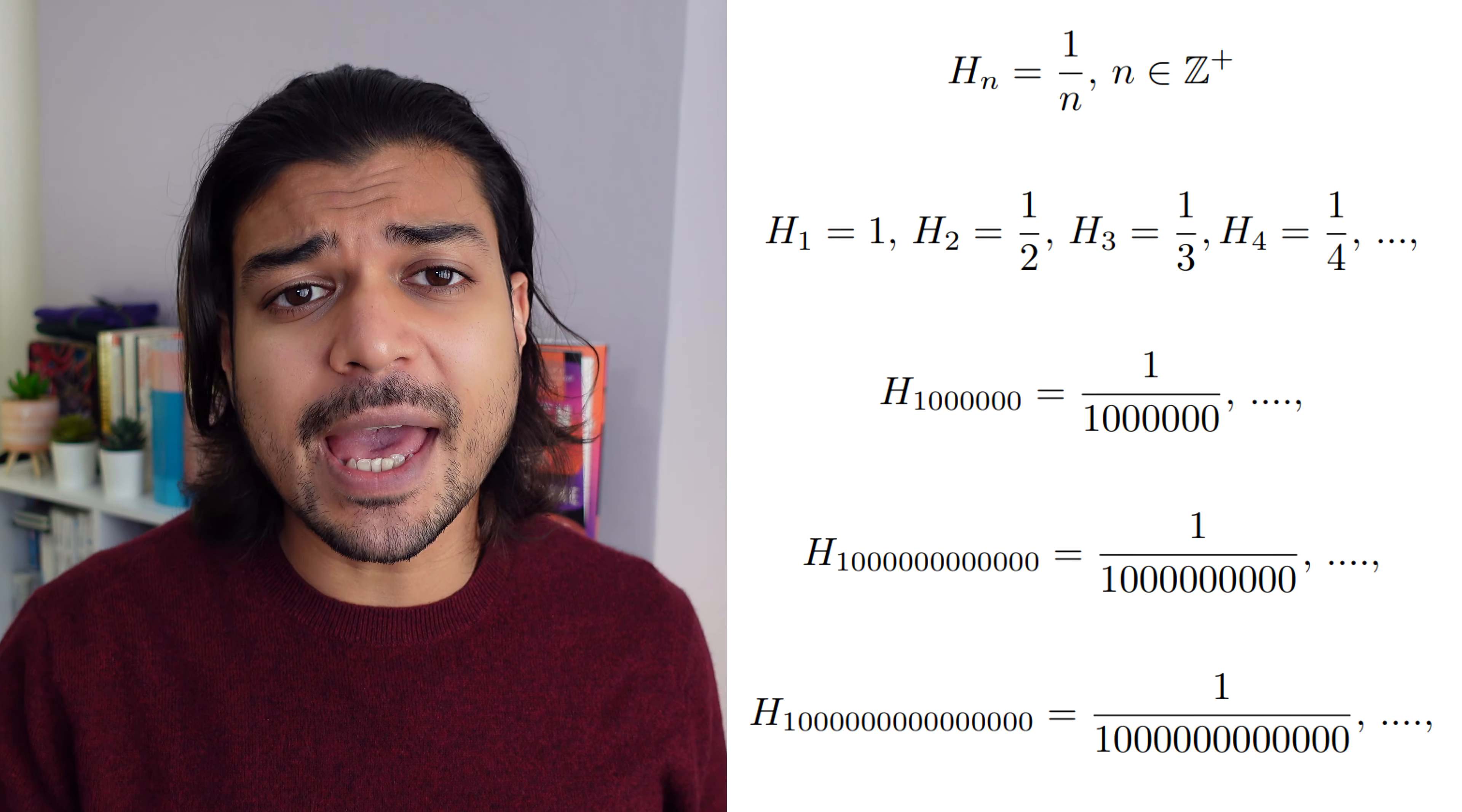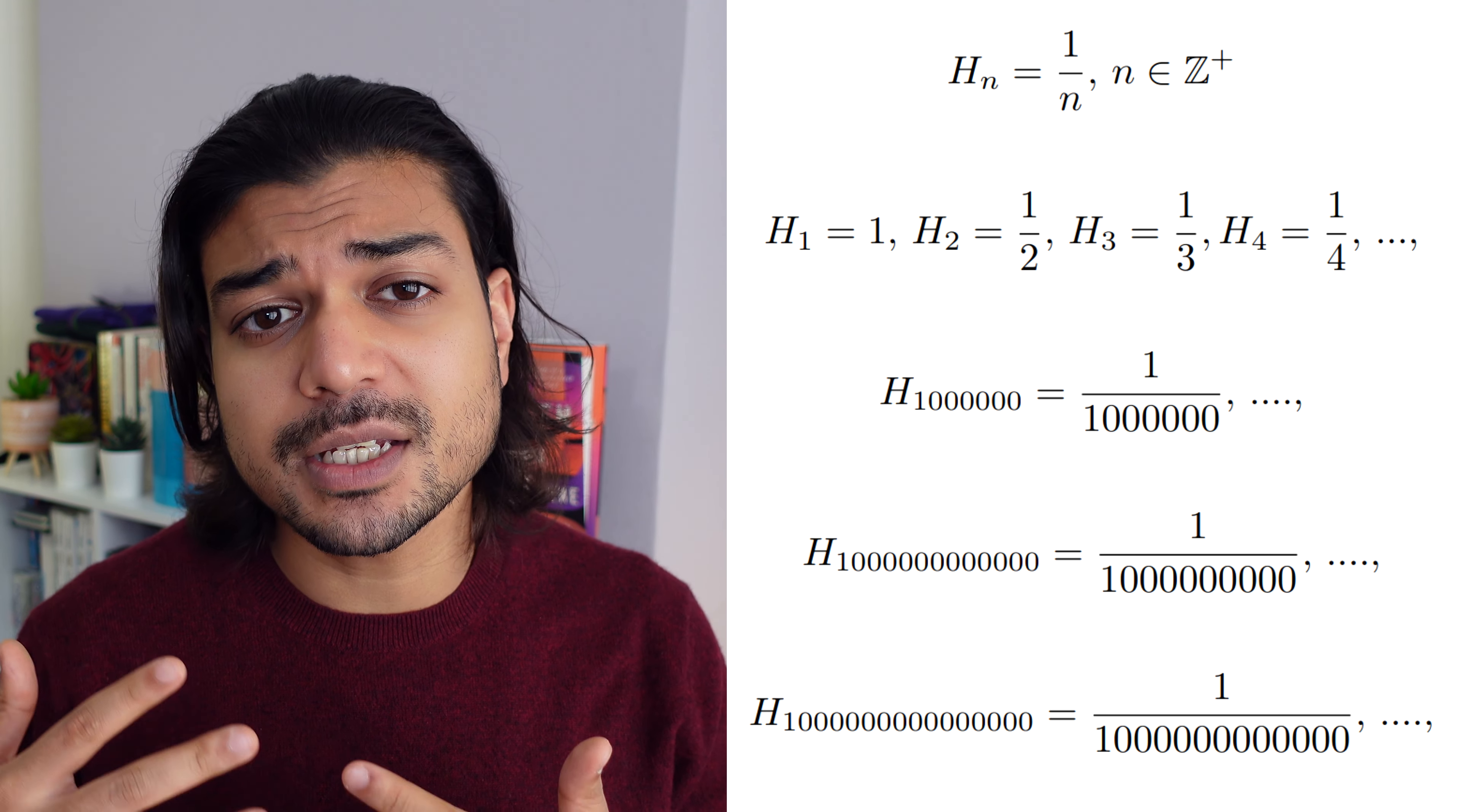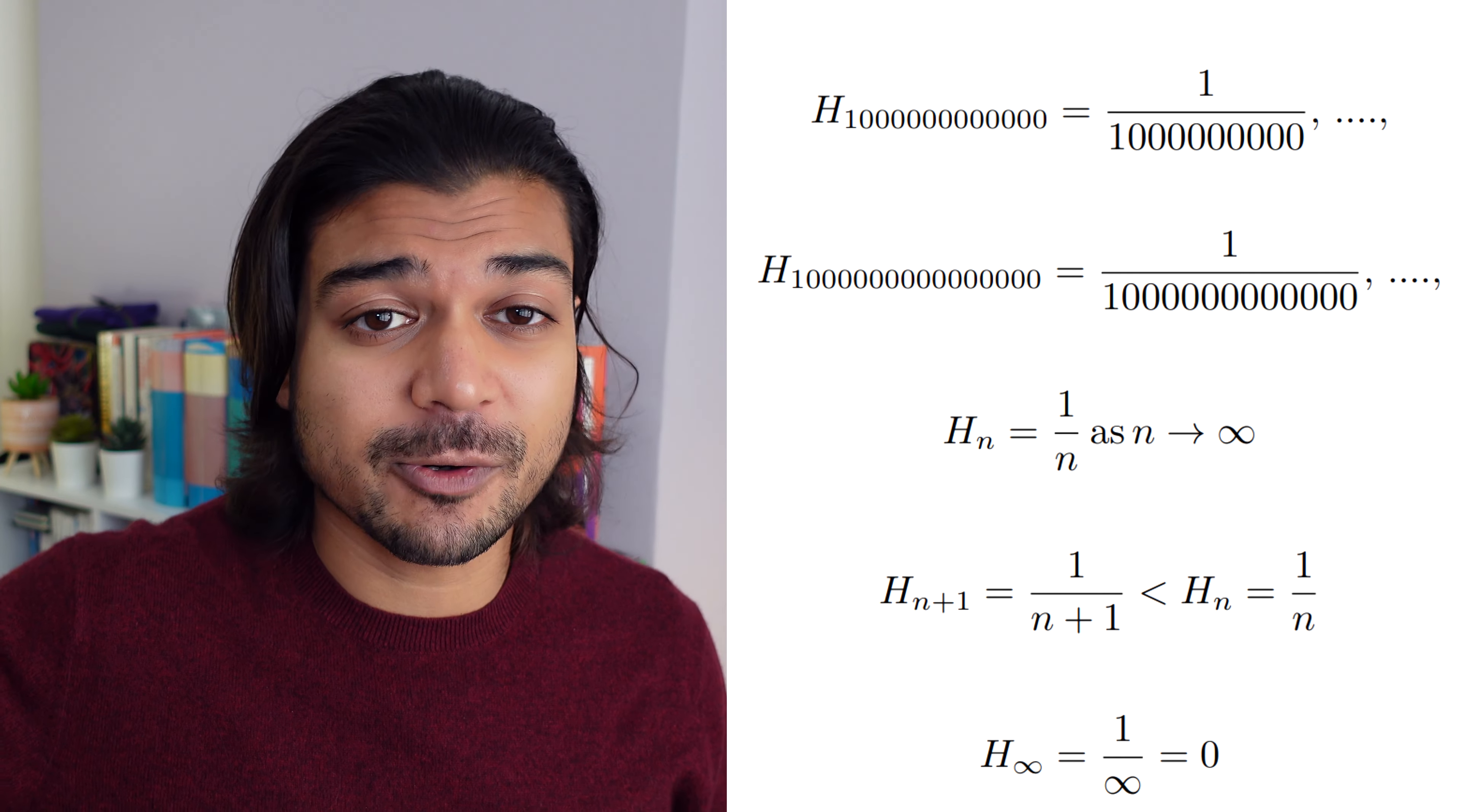Let's take the harmonic series 1 over n as an example, where n is any positive integer. So the first term of the series is 1, the second is a half, the third is a third, the fourth is a quarter, and then you get to 1 over a million, 1 over a billion, 1 over a trillion, 1 over any arbitrarily large number.